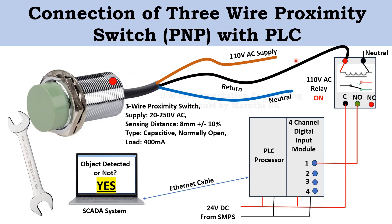In the 2-wire system, if the relay coil breaks down, the proximity switch will not work. The advantage of the 3-wire proximity switch is that we have separately applied 110V DC and neutral. Even if the relay coil breaks down, the proximity switch itself will still work and give a signal through the black wire — though the signal won't reach the relay if the cable has broken.